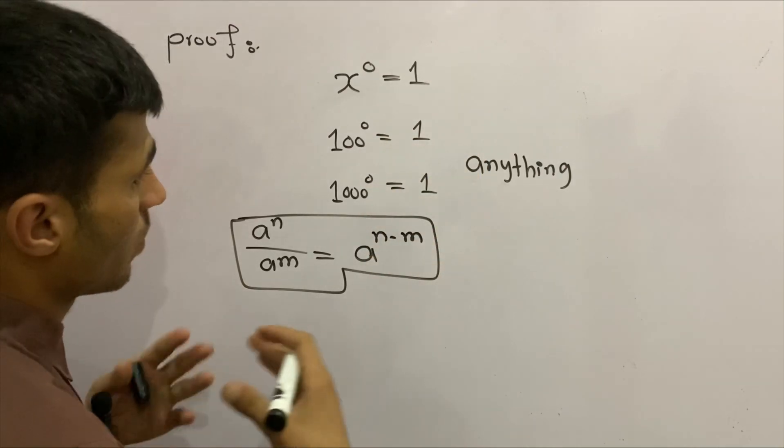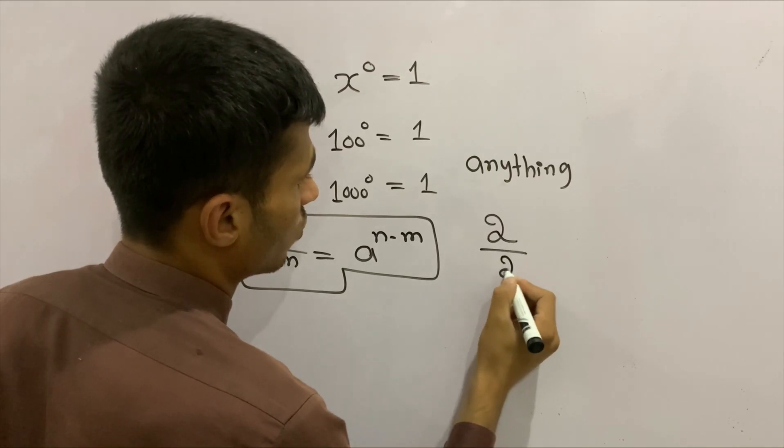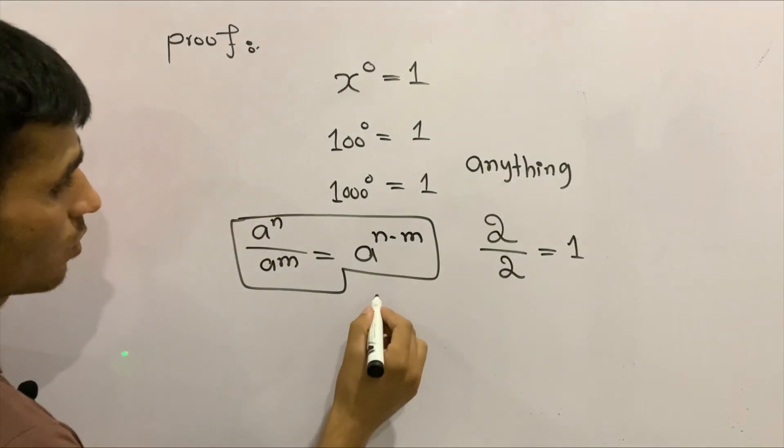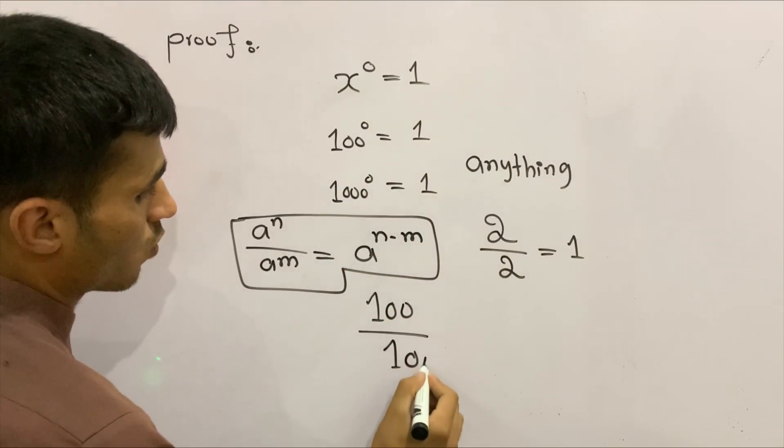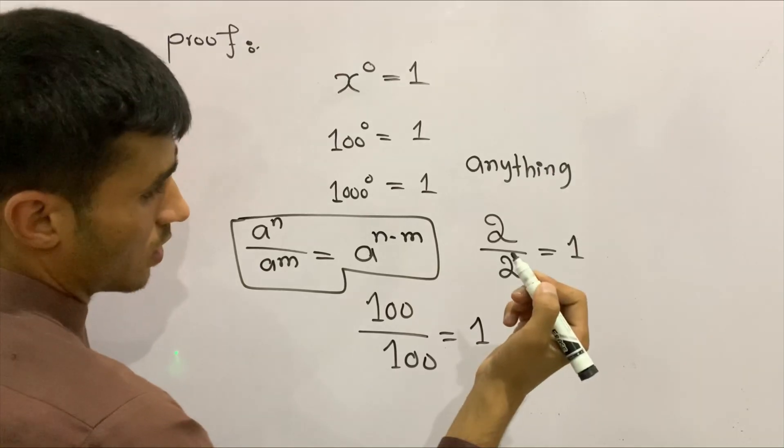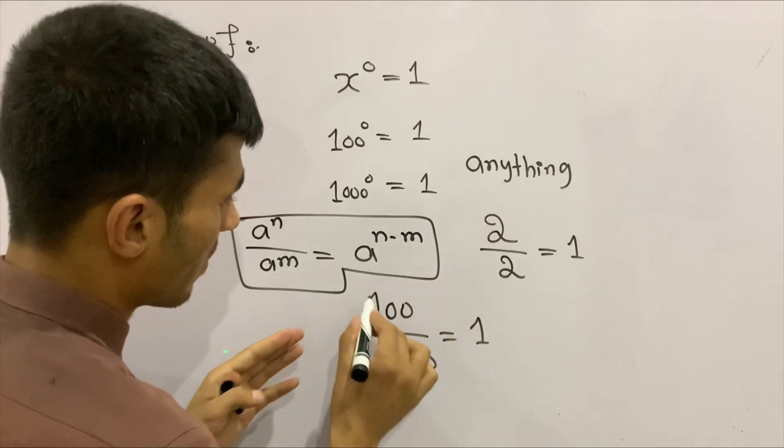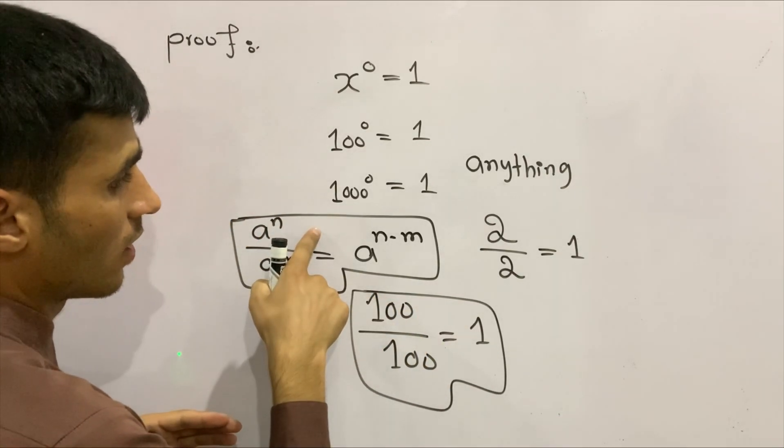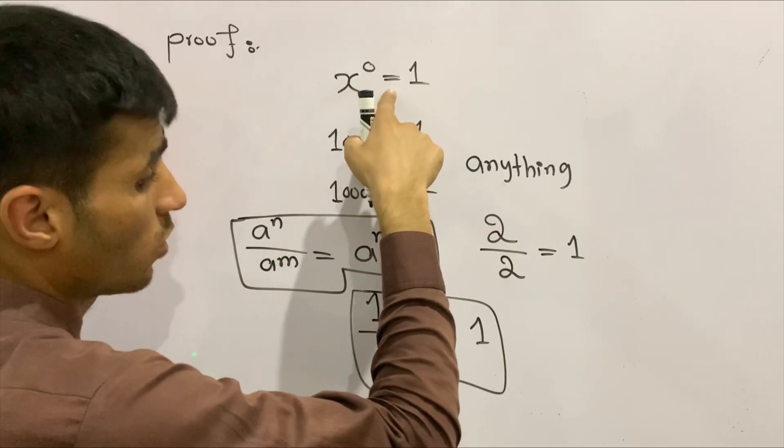Let me start with an example. If I tell you two divided by two equals what, of course you'll tell me one. If I tell you 100 divided by 100 equals what, you'll tell me one. If we think of this in terms of the exponent law, we're going to prove our statement.